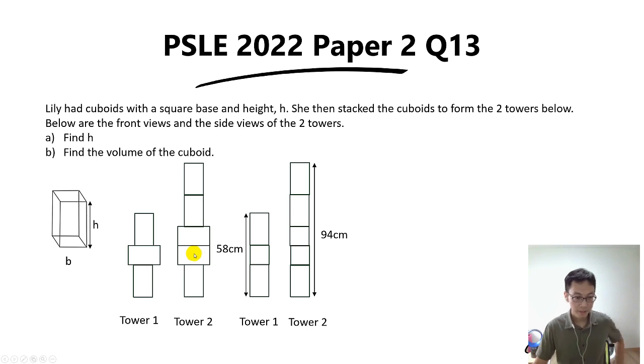She's going to stack the cuboids to form the two towers below, Tower 1 and Tower 2. Tower 1 consists of two cuboids laid vertically then the middle cuboid laid horizontally. Tower 2 consists of three vertical cuboids and two horizontal cuboids.